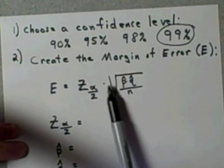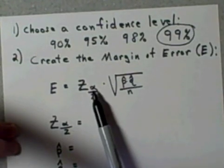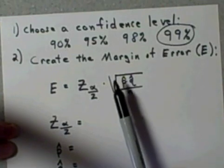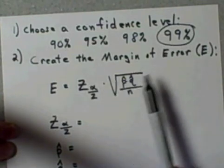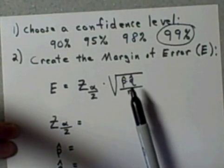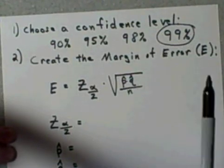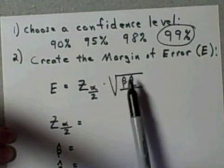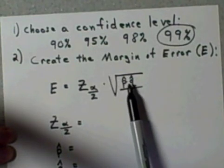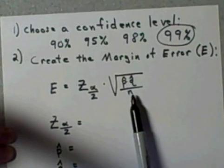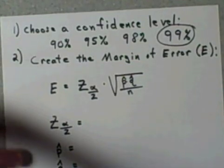We'll then take this critical value and multiply it times the standard deviation that's defined for a distribution of sample proportions, and it is simply the square root of p hat times q hat divided by n. Now let's go through these.